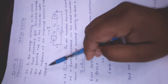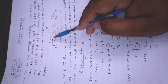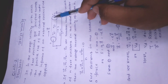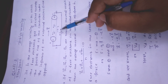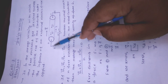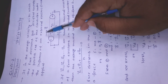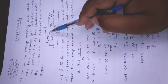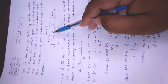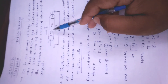मान लीजिए कोई conductor है। इस conductor के एक end को हमने battery के positive end से connect किया और दूसरे end को negative end से connect किया। जब switch on किया तो current flow करना start किया। इस conductor के surrounding में एक बाहरी electric field यानि विद्युत क्षेत्र हम provide कर रहे हैं। हम जानते हैं कि किसी भी conductor में कुछ न कुछ free electrons होते ही हैं।